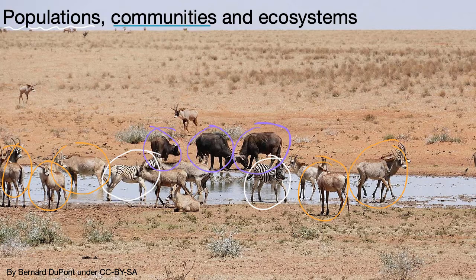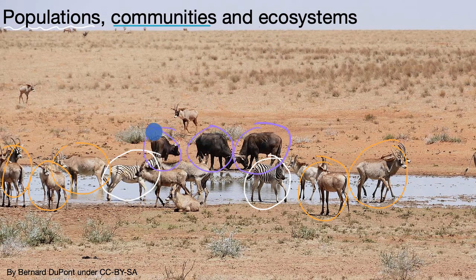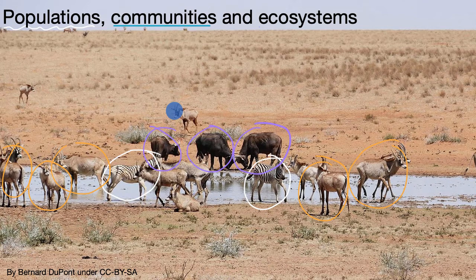What would be an ecosystem then? Well, an ecosystem is all of the living organisms plus all of the non-living things. So the ecosystem we see here would also include the water, the dirt, and the air. Organisms like those we see here are constantly interacting with both the living and non-living parts of their environment. These interactions are how organisms get food, shelter, water, and warmth — how organisms survive and produce offspring.